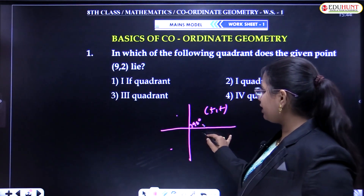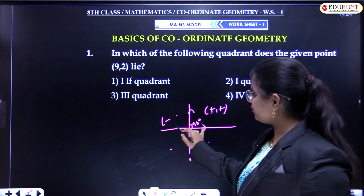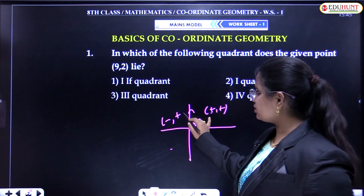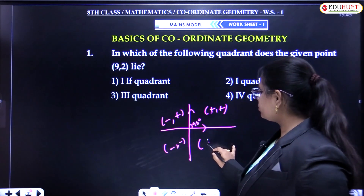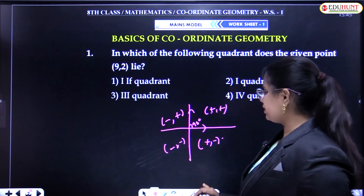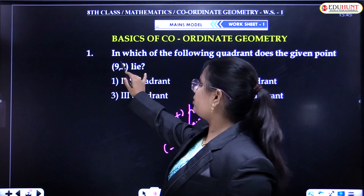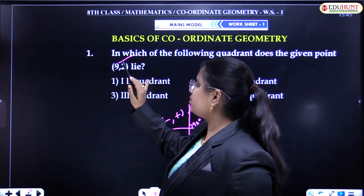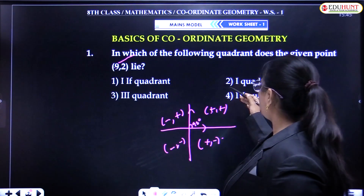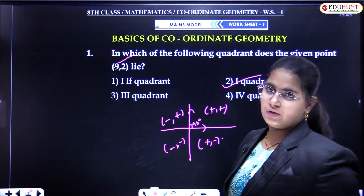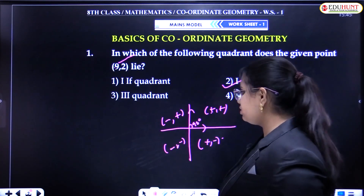X is positive and Y is also positive in the first quadrant. In the second quadrant, X is negative and Y is positive. In the third quadrant, both are negative. In the fourth quadrant, X is positive and Y is negative. So for the point (9, 2): 9 is positive and 2 is also positive, so (9, 2) lies in the first quadrant.